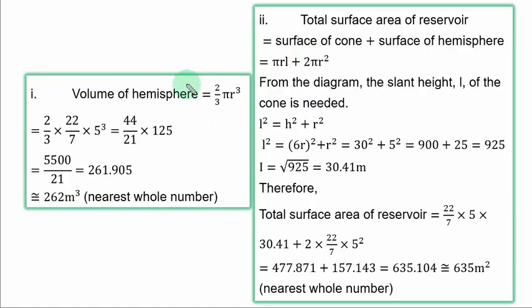Problem 1 of part b. You are asked to find the volume of the hemisphere. This is the formula. You simply replace π with 22/7 and r with 5. So you have 2/3 times 22/7 times 5³. 2 times 22 is 44, 7 times 3 is 21, 5 cubed is 125.